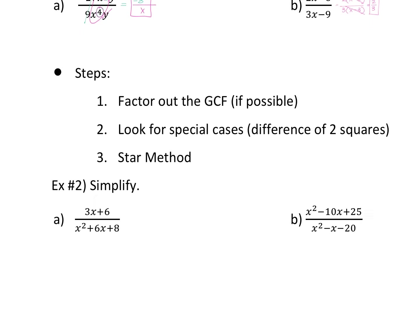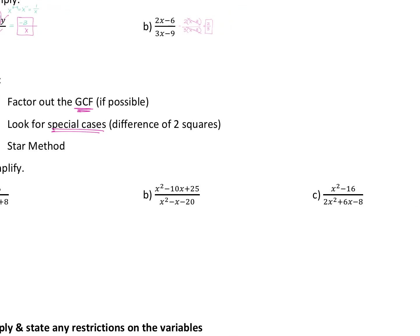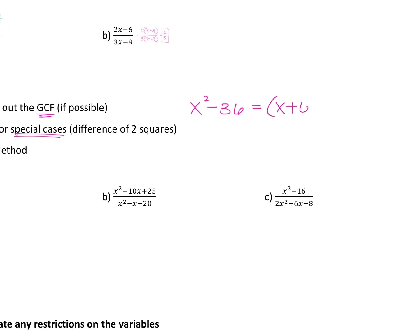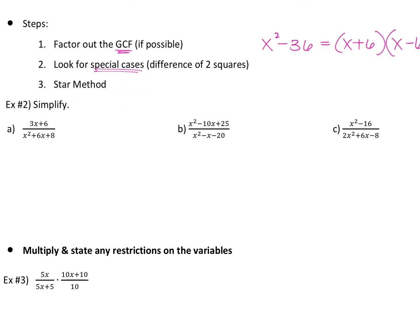Here's the new stuff. When you are multiplying rational expressions, there are three steps. Step one: factor out the GCF if possible — there's not always a GCF, but if there is, we want it out. Number two: look for special cases — remember the difference of two squares. If you see x squared minus 36, that becomes x plus 6 times x minus 6. Step three: once you've done those two things, use the star method to finish it up, and then you'll do a lot of slashing and getting rid of things.